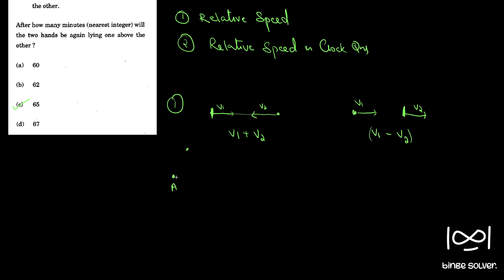Say from point A and point B there is 100 kilometers. A car is moving from A towards B at 30 kilometers per hour, and a car from B is moving towards A at 20 kilometers per hour. So if the question asks: at what time do both these cars meet? — we can use the relative speed concept.